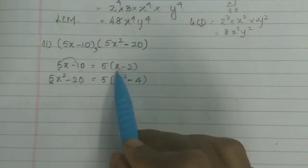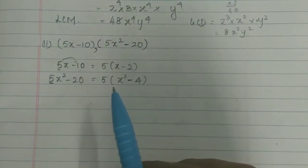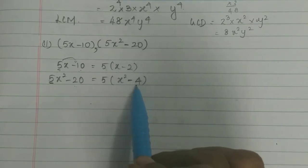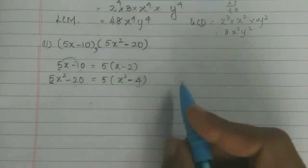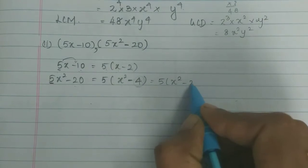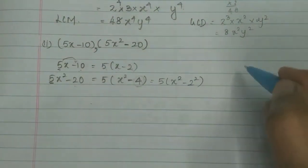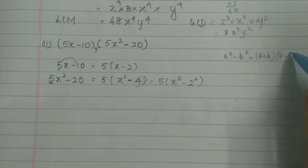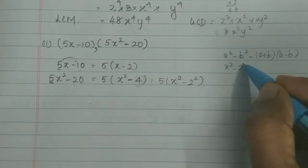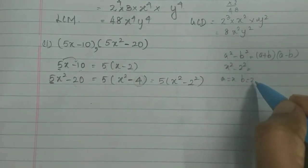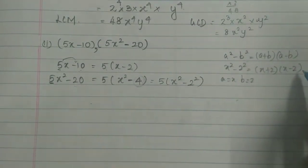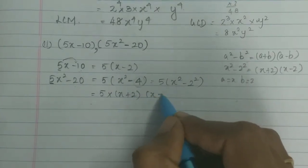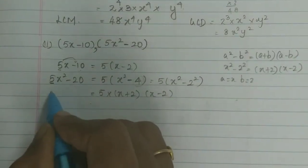Now x² - 4: there is a formula here. 4 is the square of 2, so this is a² - b² form. Using the third identity, a² - b² = (a+b)(a-b), where a = x and b = 2. So 5x² - 20 = 5(x+2)(x-2).